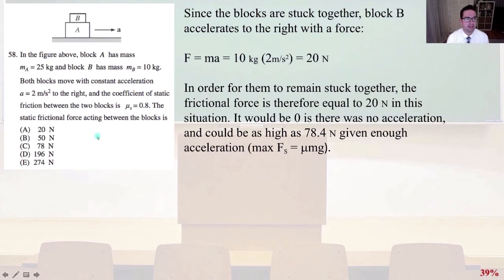58. In the figure above, block A has mass m subscript a equals 25 kg, and block B has mass m subscript b equals 10 kg. Both blocks move with constant acceleration a equals 2 m per second squared to the right. And the coefficient of static friction between the two blocks is us equals 0.8. The static frictional force acting between the blocks is... So, since the blocks are stuck together, block B accelerates to the right with a force of F equals ma equals 10 kg times 2 m per second squared. That equals 20 newtons. So, in order for them to remain stuck together, the frictional force is therefore equal to 20 newtons in this situation. It would be zero if there's no acceleration to the right. And it could be as high as 78.4 newtons given enough acceleration.